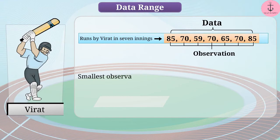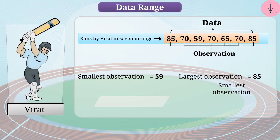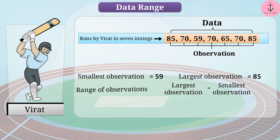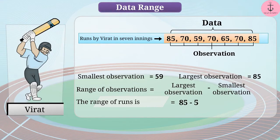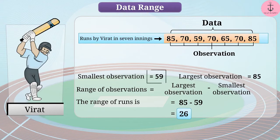The smallest observation in the data provided is 59 and the largest observation is 85. If we subtract the smallest observation from the largest observation, then this gives us the range of observations. The range of runs is 85 minus 59, which is equal to 26. The range of data provides us with detailed information about the data, such as the extension of data is from 59 to 85.